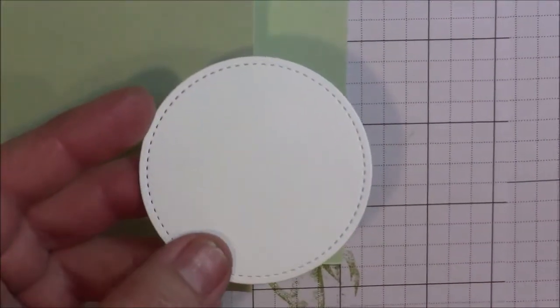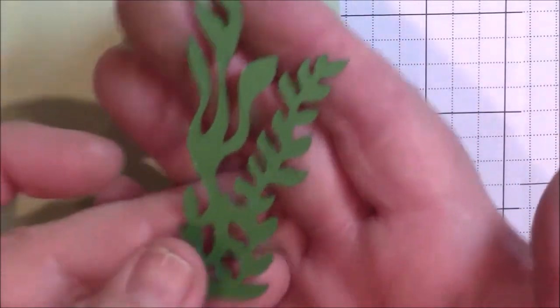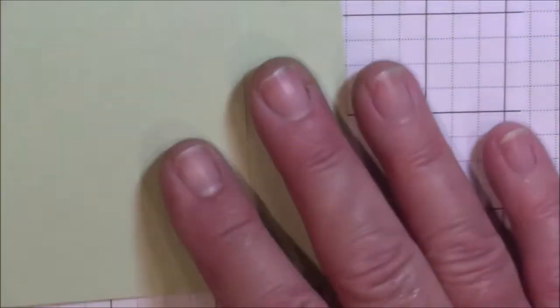Then I took some basic white and cut out the second to the largest stitched circle with the stitched shape dies. It had these grasses in it so I want to use this. We are going to have that also.